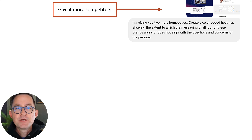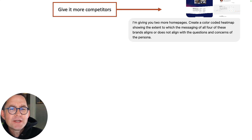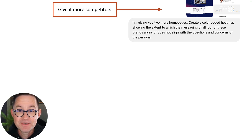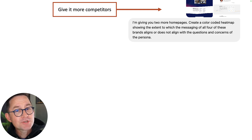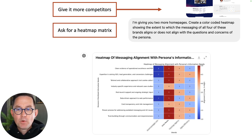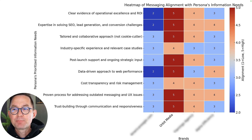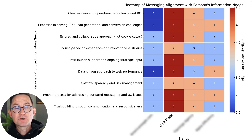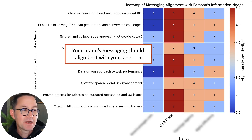It comes back — in this case it actually gave star reviews; you never know what it's going to do. Hopefully all of this aligns better with us because we gave it the two homepages. If our brand isn't better aligned with our target than the competitor, we've got a problem. But let's keep going — let's give it some more homepages and do a bigger competitive analysis. My buyer isn't just looking at one or two options; they're surveying the whole landscape. So I give it two more competitors — full-page screenshots — and prompt: create a color-coded heat map matrix showing the extent to which the messaging of all four brands aligns with the questions and concerns of this persona. There I am in the second column — strong alignment, all fives and fours.